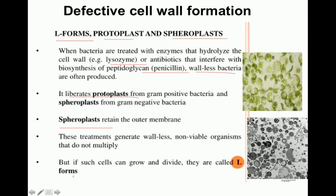L-forms were first discovered at the Lister Institute in London. They develop spontaneously in the presence of penicillin, which interferes with cell wall synthesis, or in the presence of lysozymes that digest the disaccharides. Once formed, L-forms take up a gram-negative staining, are of variable sizes, can still grow and divide, and can regain their cell wall when the inhibitory substance is removed - unlike protoplasts and spheroplasts which are non-viable and cannot multiply.